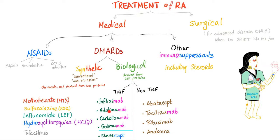The biological DMARDs are either TNF or non-TNF. TNF inhibitors include infliximab, adalimumab, certolizumab, golimumab, and etanercept — 'cept' for receptor. Non-TNF inhibitors include abatacept, tocilizumab, rituximab, and anakinra.